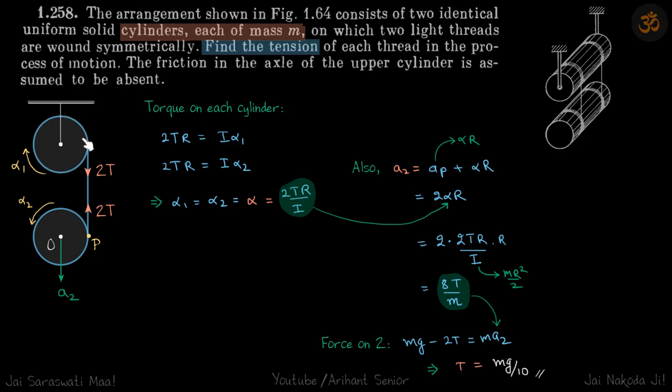This is turning with alpha, so this point is going down with alpha r, which means this point P is also going down with alpha r. And this point with respect to this point is going alpha r down.